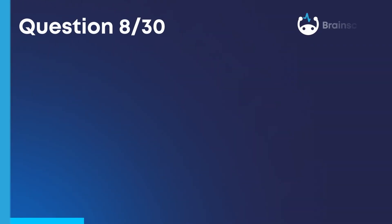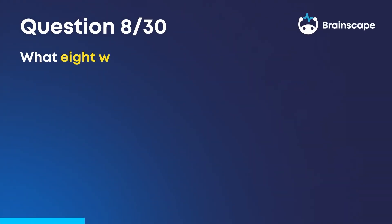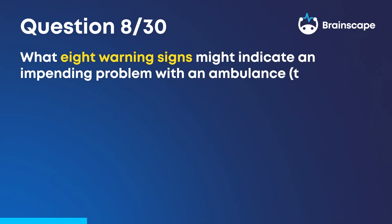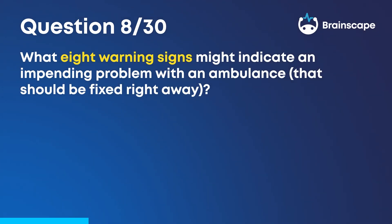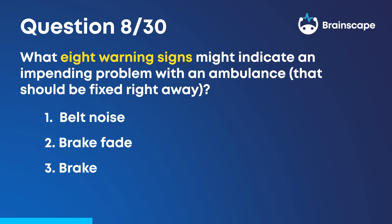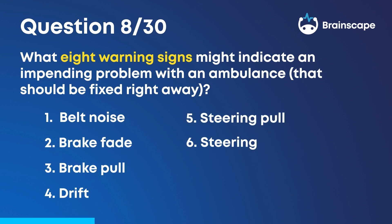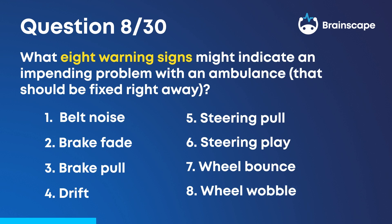Question 8. What eight warning signs might indicate an impending problem with an ambulance that should be fixed right away? Belt noise, brake fade, brake pull, drift, steering pull, steering play, wheel bounce, and wheel wobble.